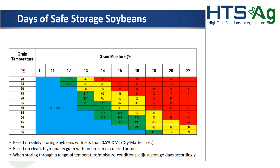The chart looks very similar for soybeans. Very dry soybeans, even at high temperature, probably no chance of spoilage. If we take high temperature and wet soybeans, we're again talking a matter of days before spoilage. Also, even at 14 to 15% moisture, if we get it very cool, we can handle that moisture level in soybeans without spoilage risk. All of these charts are based on having low dry matter loss, clean, high-quality grain with no broken or cracked kernels — all of those things need to be managed well.